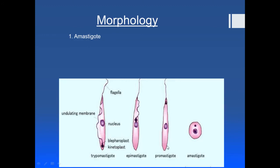The next form is the promastigote form. It has a cylindrical shape, a central nucleus, and the kinetoplast is placed anteriorly. The anterior end is the direction in which the parasite swims. There is a flagellum present, but no undulating membrane in this form.